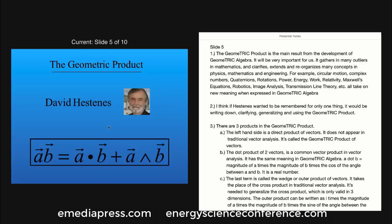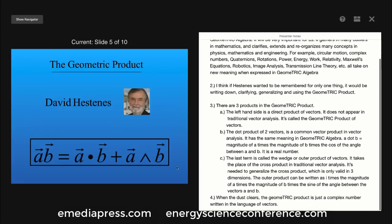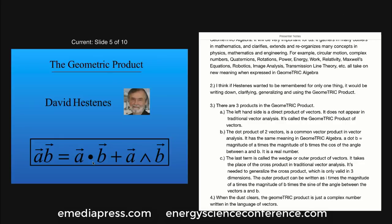I think if Hestenes wanted to be remembered for only one thing, it would be writing down, clarifying, generalizing, and using the geometric product. There are three products in a geometric product. The first product on the left-hand side is a direct product of vectors — it does not appear in traditional vector analysis and is called the geometric product of vectors. The first product on the right-hand side is the dot product of two vectors, a common vector product in vector analysis. A dot B equals the magnitude of A times the magnitude of B times the cosine of the angle between A and B. It is a real number.